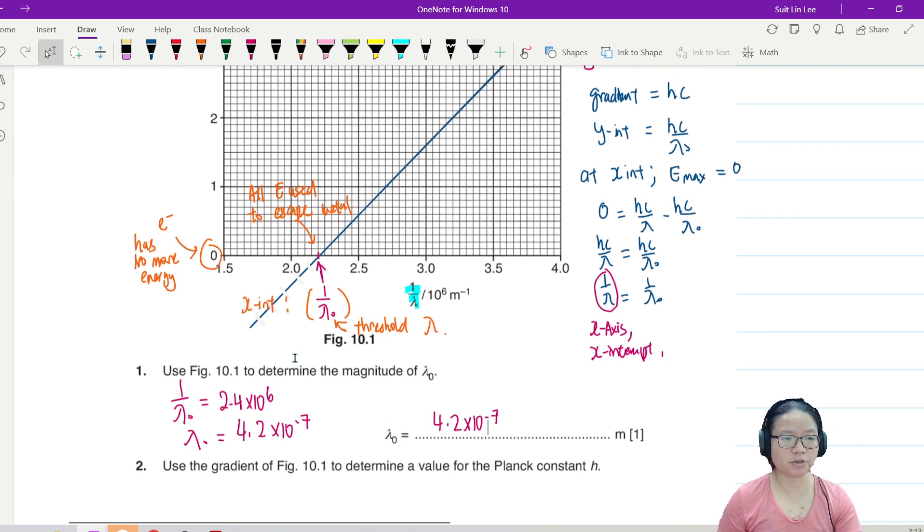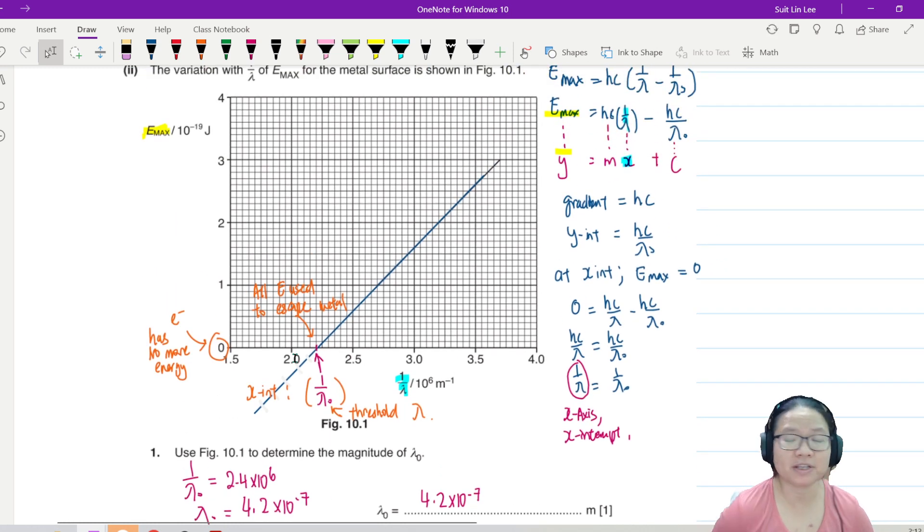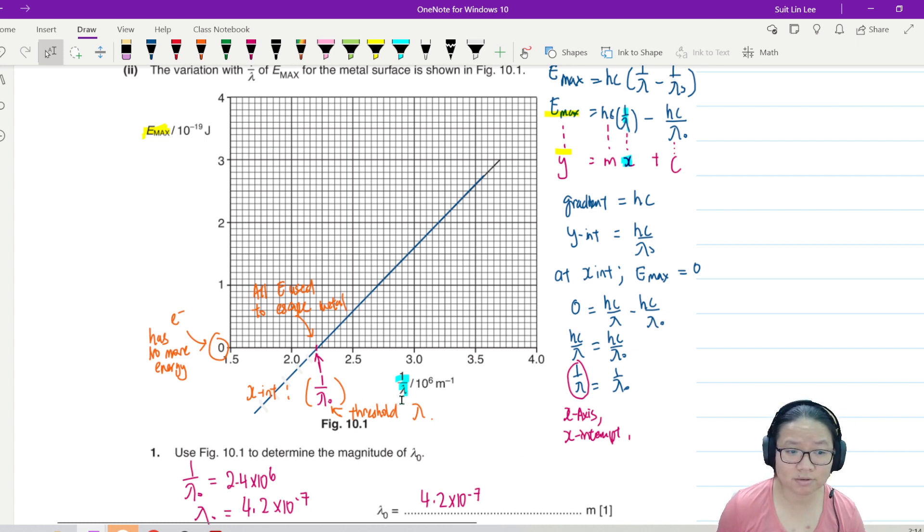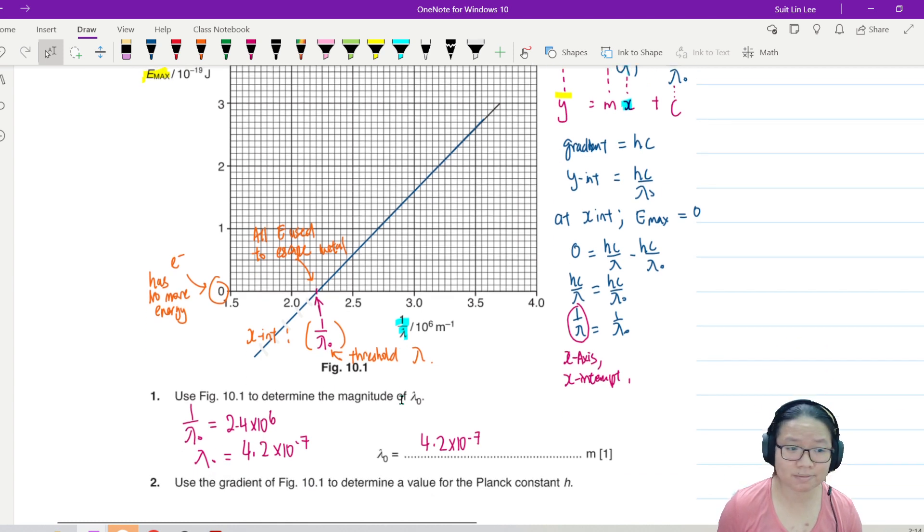When you do physics, especially at this level, you should have enough experience with yourself to know, hey, my strength - my strength is that I'm very confident to manipulate equations and find equation of a straight line. So I don't memorize. I don't go memorize the y-intercept of this graph is that, the x-intercept of that graph is that, because they can keep changing the axis. And I don't want to memorize. I want to be able to look at the axis, look at the equation and do the necessary adjustment. Trusting that the question will give me enough context.